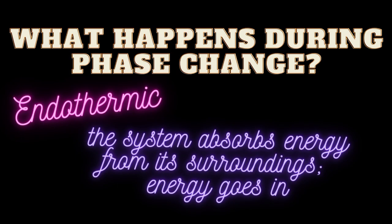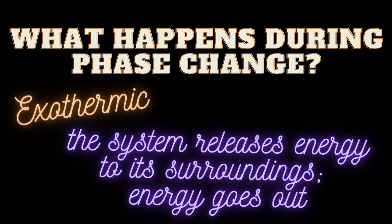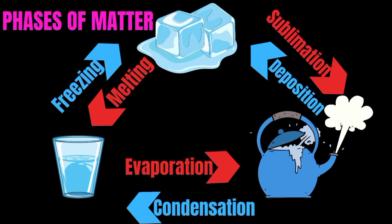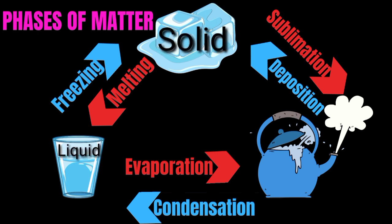What happens during a phase change? We have what we call endothermic and exothermic. When we say endothermic, the system absorbs energy from its surroundings, or the energy goes in. While exothermic, the system releases energy to its surroundings, or the energy goes out. This picture shows the three phase changes in water: solid (ice cube), liquid (water), and gas (vapor).